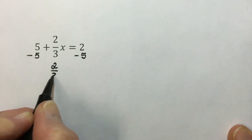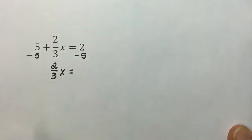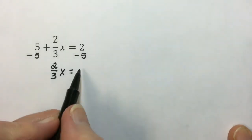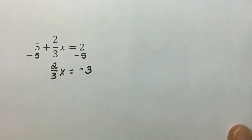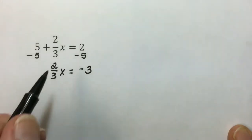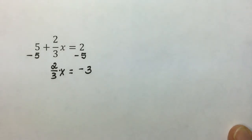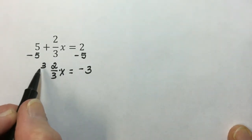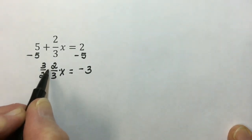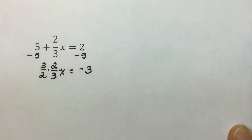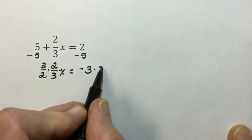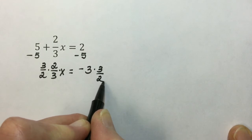Leaving 2 thirds x. 2 minus 5 is a result of a negative 3. When we have a fraction, we will multiply by its reciprocal. So in this case, to get rid of the 2 thirds, I'm going to multiply both sides, maintaining equality, by 3 halves.